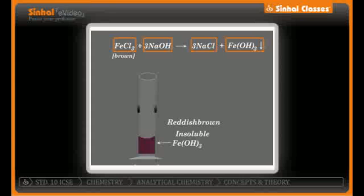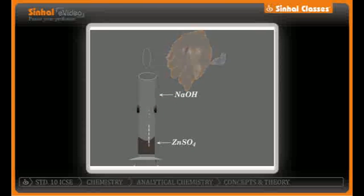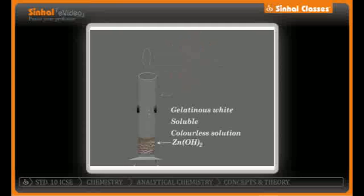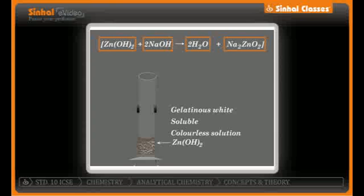Now let us consider a salt which is soluble in excess of sodium hydroxide: zinc sulfate, ZnSO4. Treated with excess NaOH, it forms sodium sulfate, Na2SO4, along with a gelatinous white precipitate of zinc hydroxide, which is soluble in excess NaOH. You balance the equation by putting 2 in front of NaOH. This precipitate of zinc hydroxide, when dissolved in excess NaOH, forms sodium zincate, Na2ZnO2, along with water — giving a colorless solution.